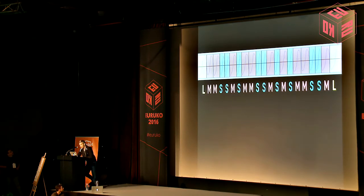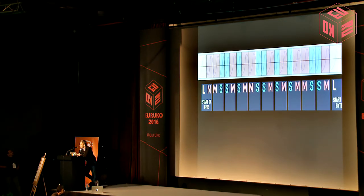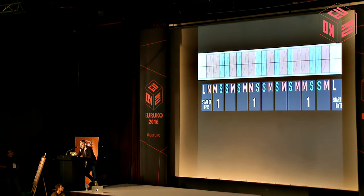Now, if you look at these pulses in pairs, we get various combinations like long-medium or medium-short. And each combination has a specific meaning. Long-medium, for example, is start of byte, and it tells us that a byte is going to start. Medium-short is a one bit. And short-medium is a zero bit.